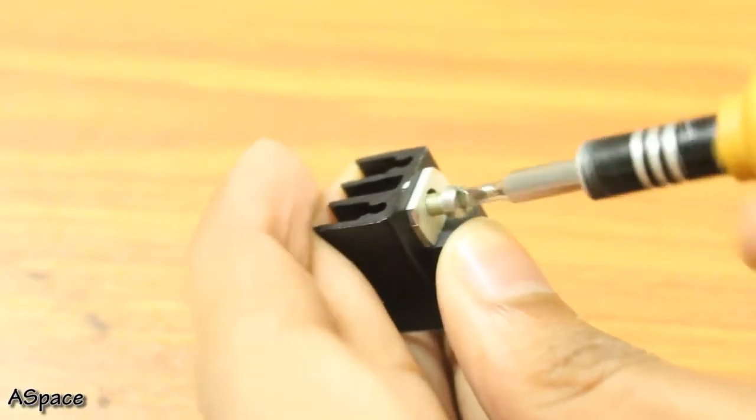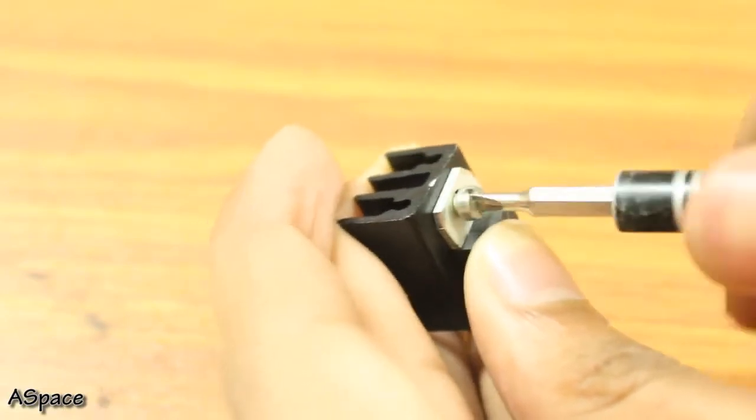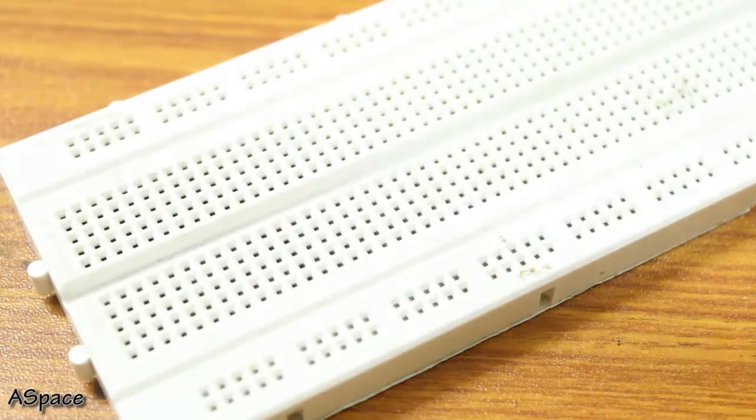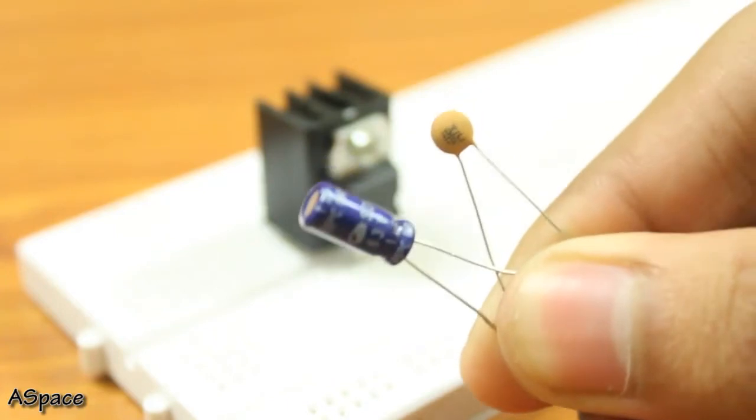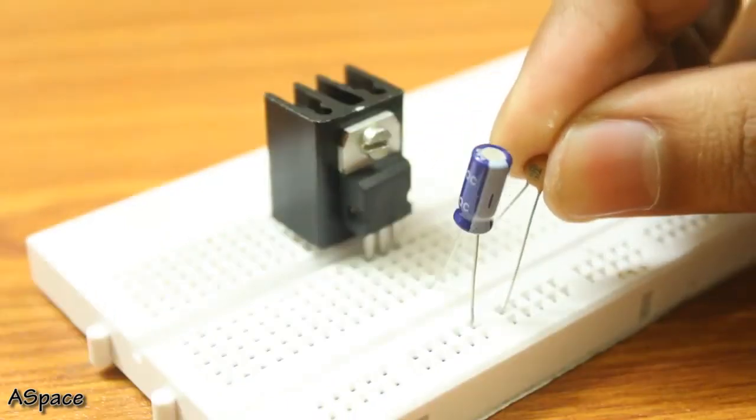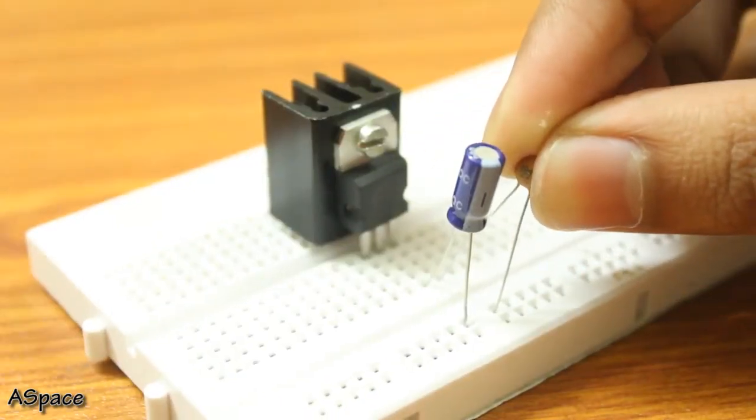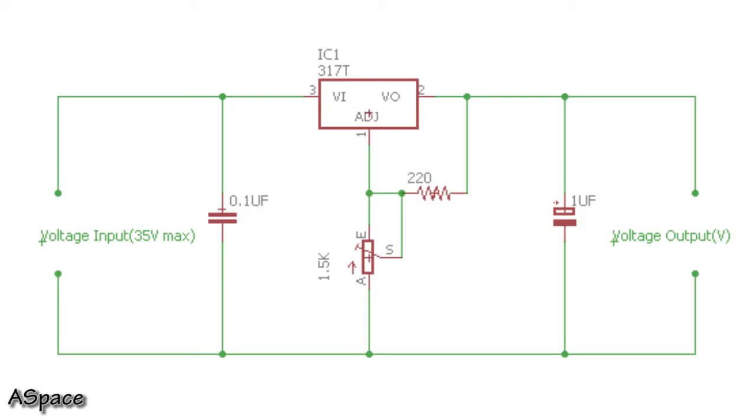Place the LM317 on the breadboard and make sure to screw a heat sink on it because this dude runs hot. Connect a 1µF and 0.1µF capacitor to the voltage input and voltage output pin as per the schematic.